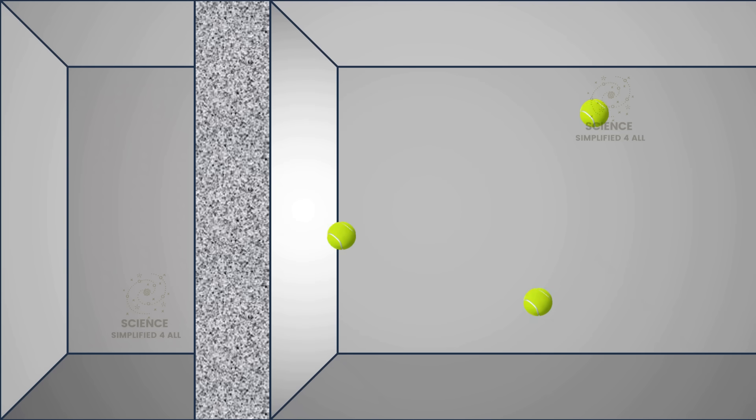Imagine throwing thousands of tennis balls at a solid wall, expecting every single one to bounce back. But then suddenly, one passes straight through and appears on the other side. How weird would that be?